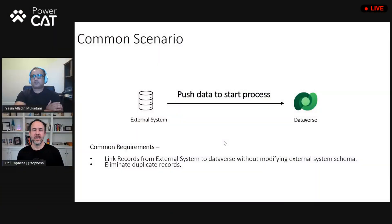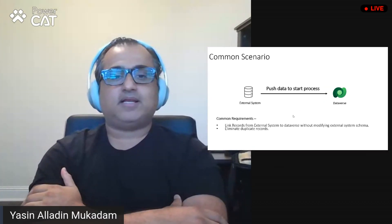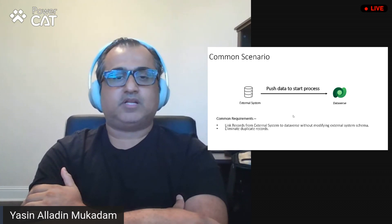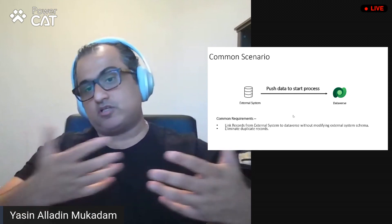Dataverse data does not live in isolation or a silo — it's always connected to an external enterprise system. A very common scenario would be a citizen developer who wants to build a process for their team, but the data is coming from an external system. When that data is pushed from the external system to Dataverse, it needs to start a process. The requirement is: how do I link this record to my external system keys that uniquely define it, without making any drastic changes, since I don't have access to the external system?